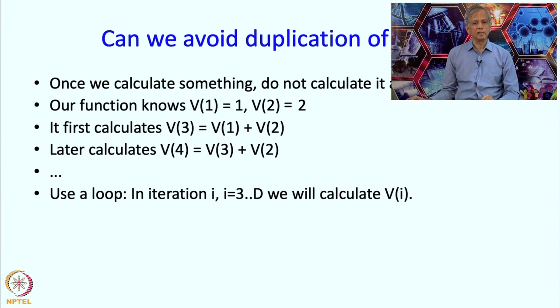So in general we could think of doing this in a loop. In iteration i where i goes from 3 to d, we will calculate Vi because for i equals 1 and 2 there is nothing to be done - those values are already known.